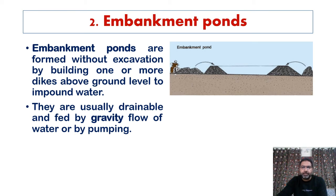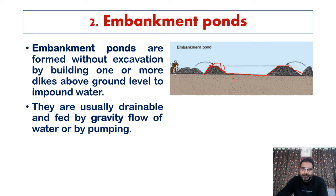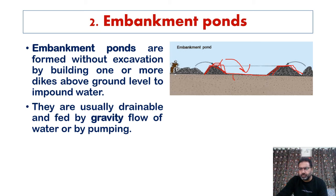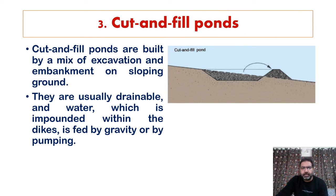The second category is embankment ponds — constructed above the ground without excavation, by building one or more dikes above the ground level to impound water. These walls help collect water and such ponds are usually drainable, fed by gravity flow of water or by pumping.